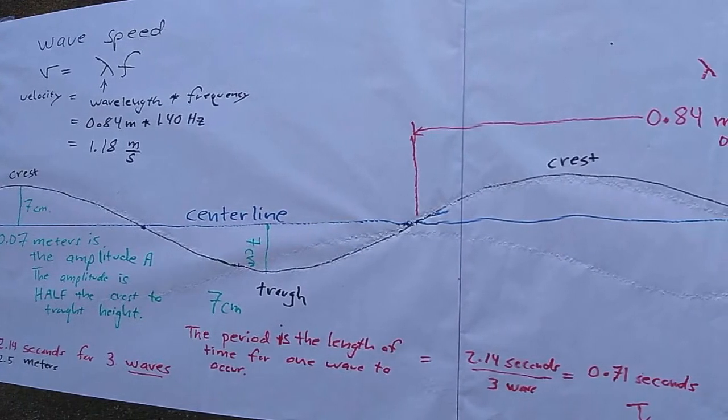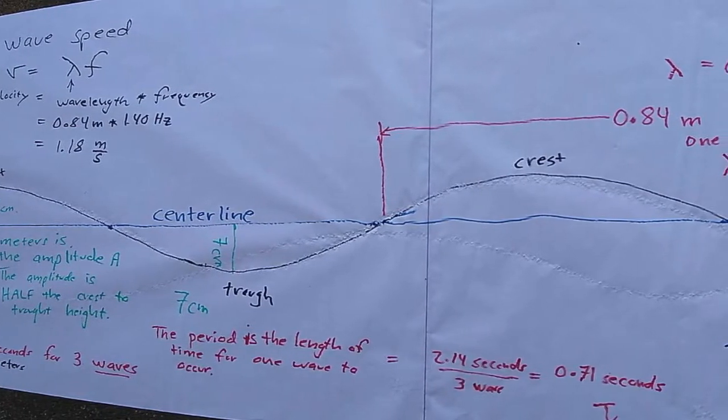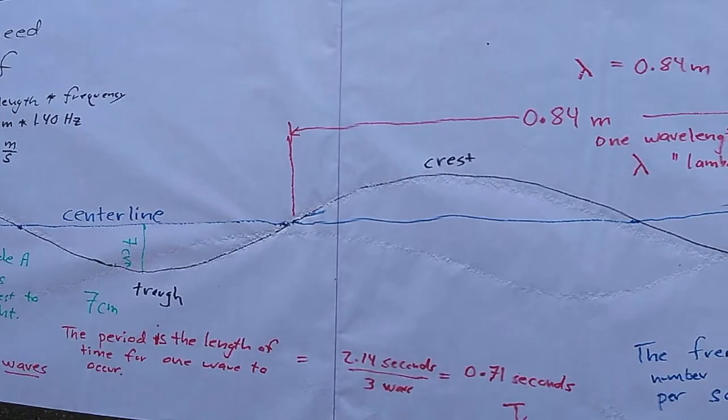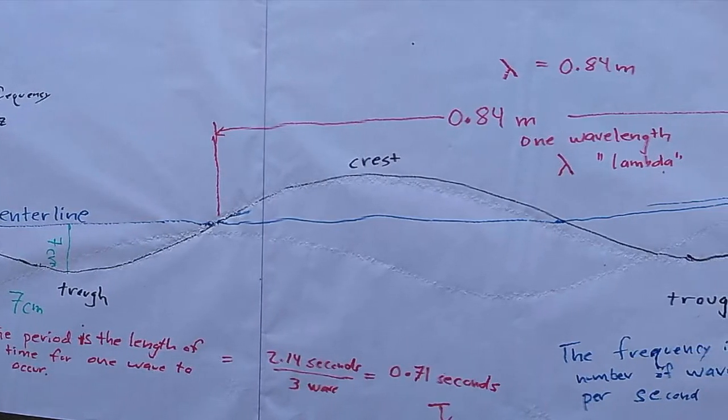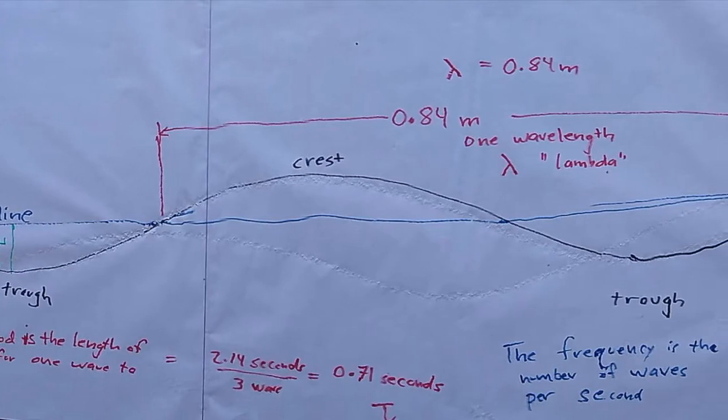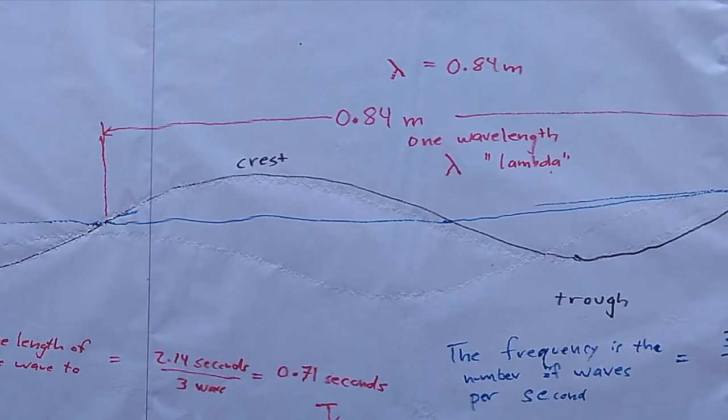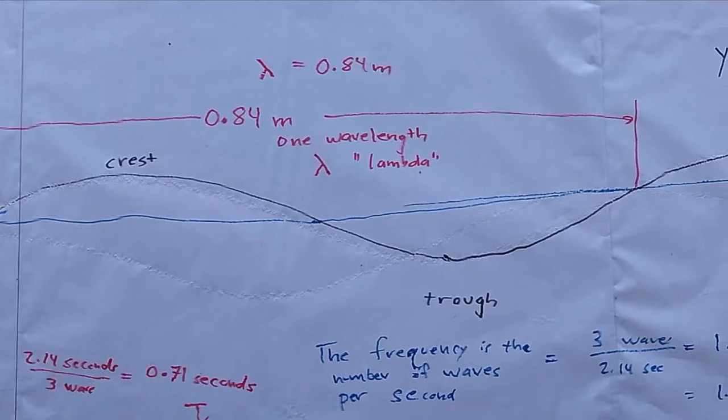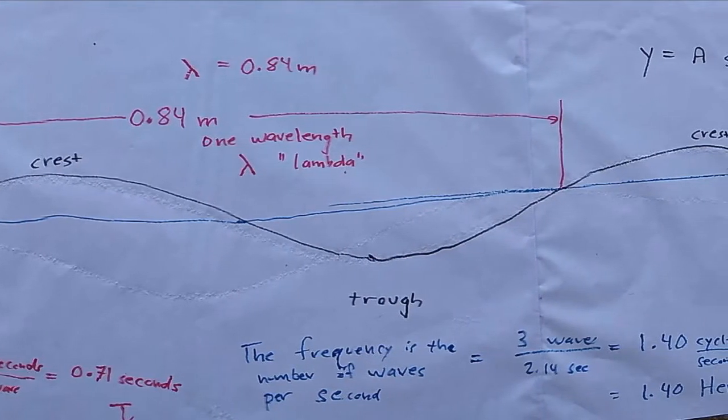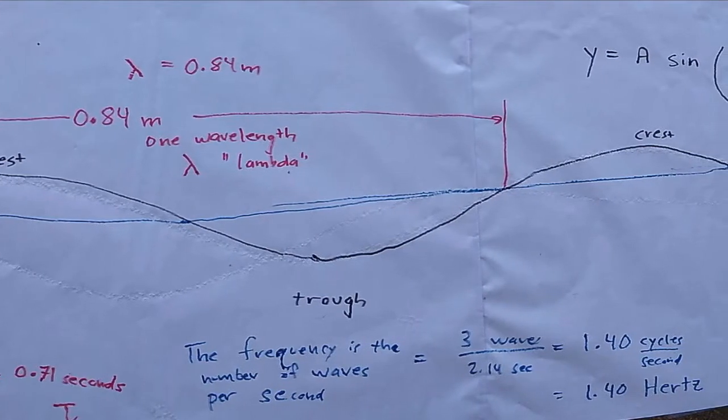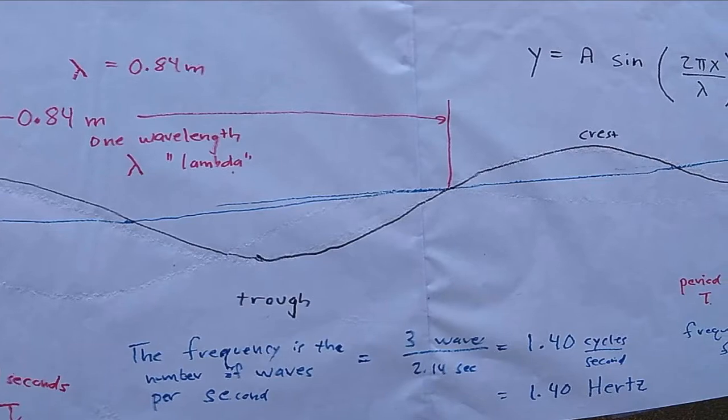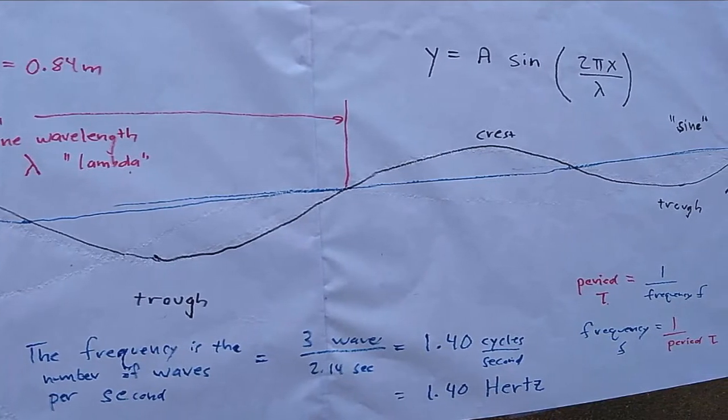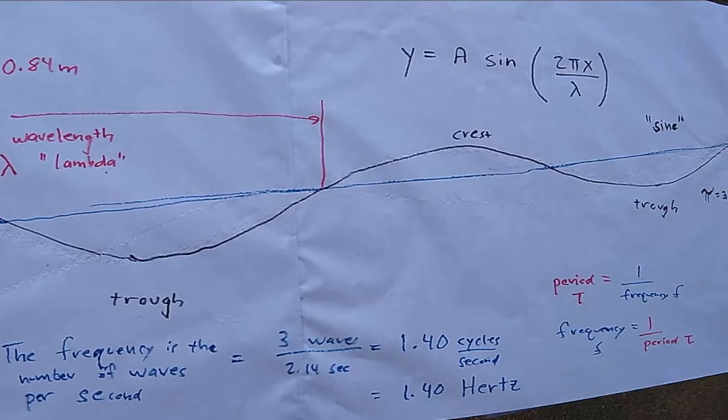So in this video, I've introduced ideas such as wave speed, the period of a wave, the amplitude of a wave, the wavelength of a wave, the calculation of the frequency. Remember, time divided by the number of waves gets you the period, the length of one wave in time. Whereas, if you take the number of waves and divide by the time, you get the frequency. I know that's confusing. Go back and watch the video again and again and again. But the frequency is how rapidly something is wiggling, and the period is the length of time for one wiggle. I've also shown you the equation of the wave that is a sine wave, a trigonometric wave.